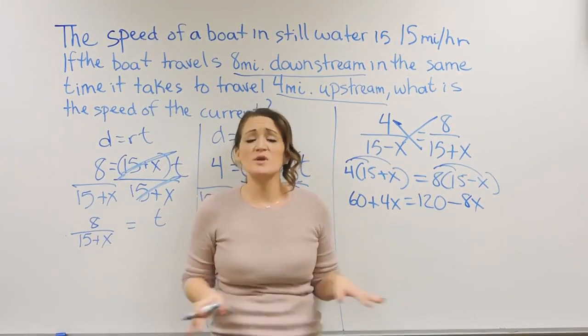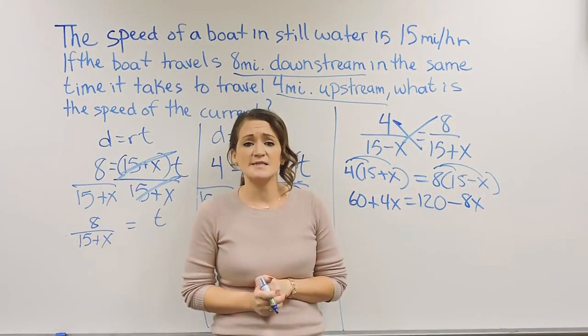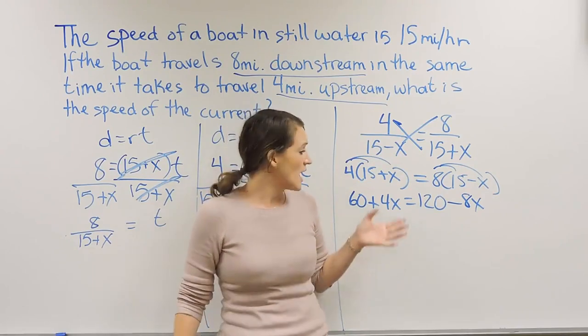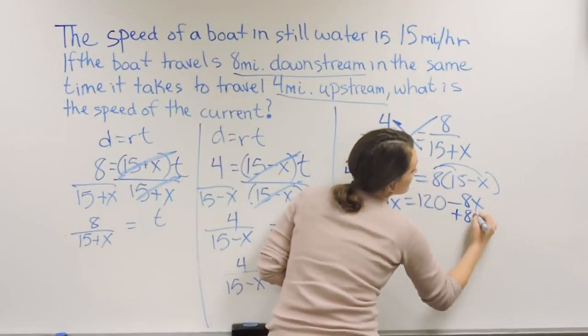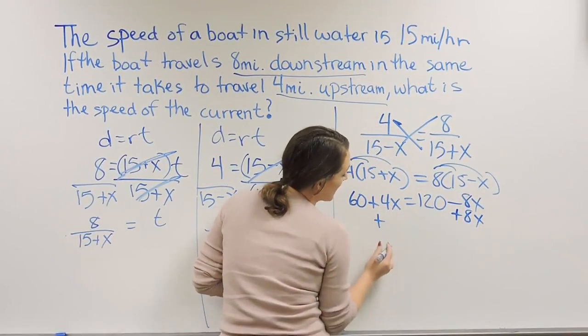After we've simplified, we do not have any like terms, so our next step is to isolate the variable. Get your X on one side, get your number on the other side. I'm going to move my X to the left-hand side.